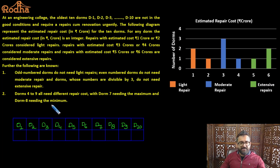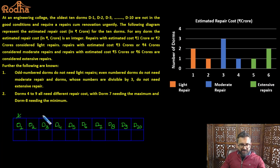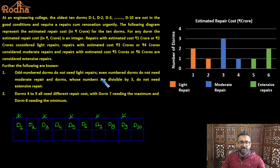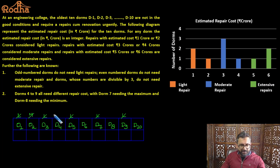Now let's apply the first constraint: odd-numbered DOMs do not need light repair. So DOMs 1, 3, 5, 7, and 9 don't need light repair. The second constraint: even-numbered DOMs do not need moderate repair.